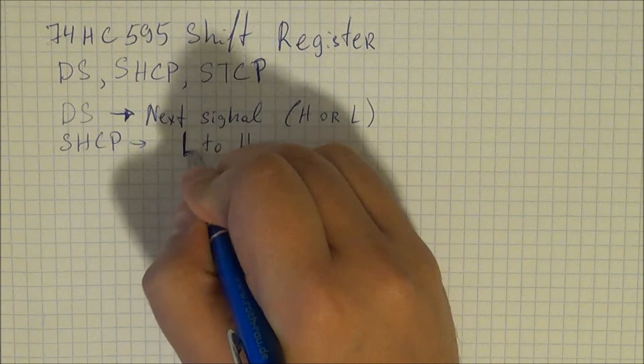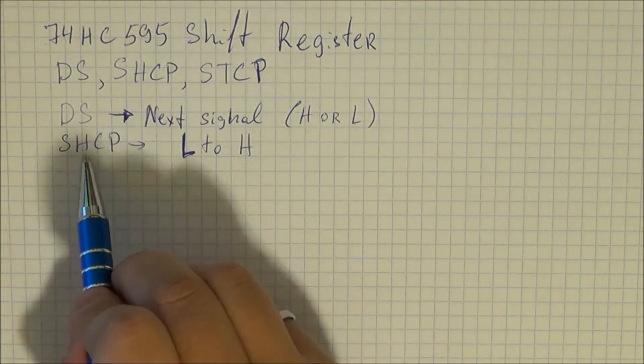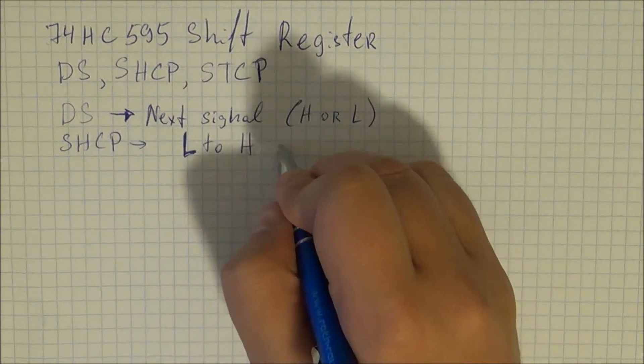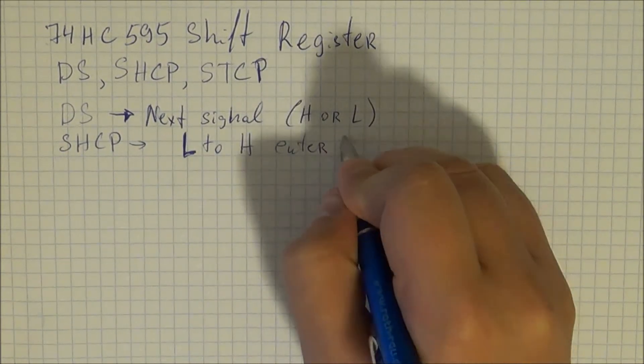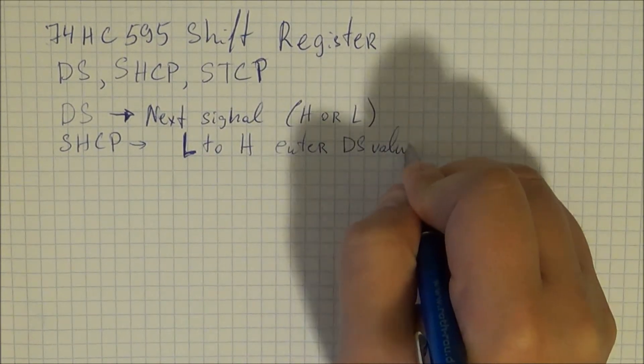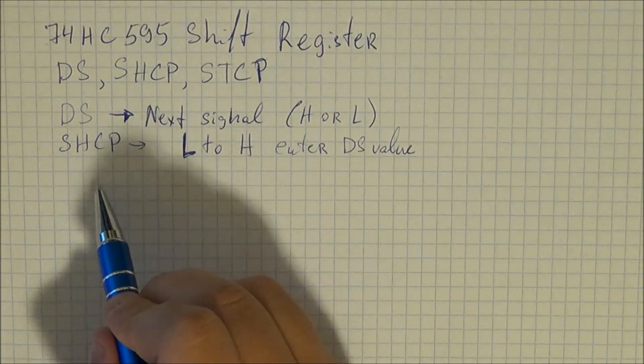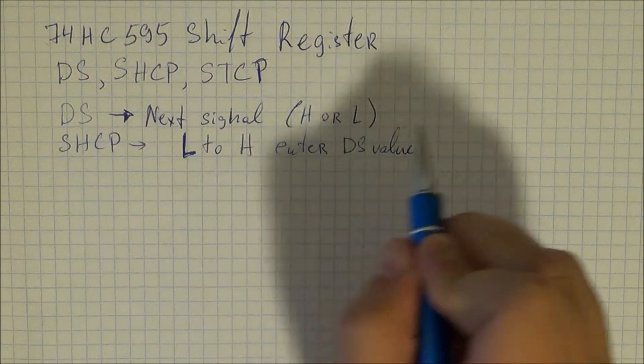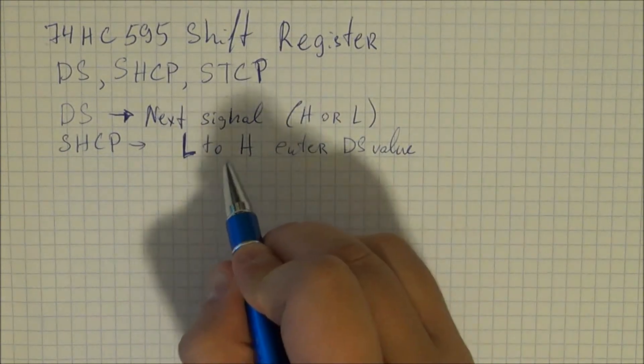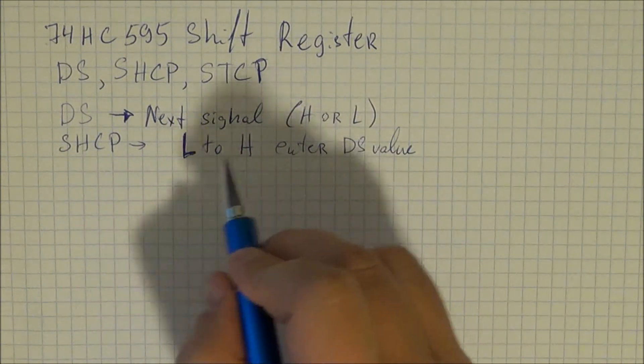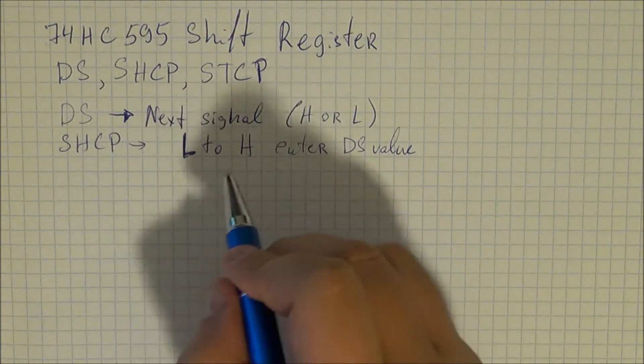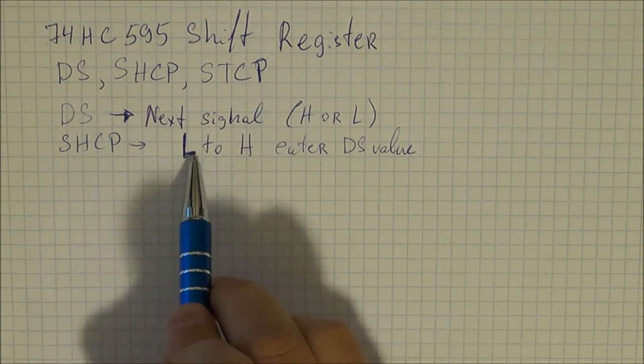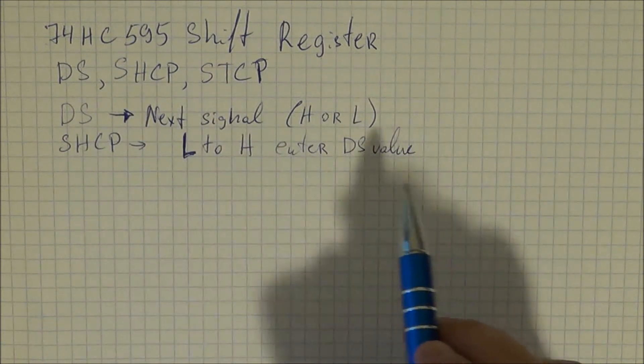And this is basically done when you shift low to high. So when your clock goes low to high on the SHCP pin you are going to enter DS value. So this shift register has eight values so you can enter them one by one. When you turn on the device obviously they are all going to be zero so all your LEDs or those pins are going to be low.